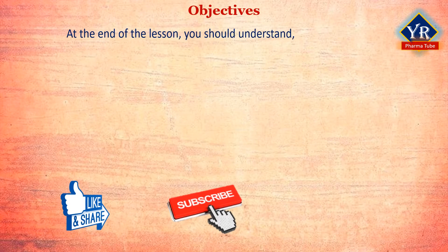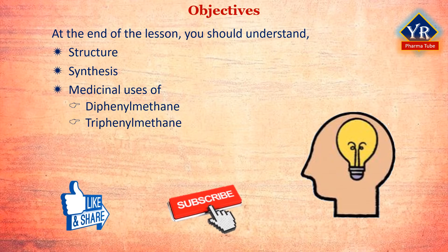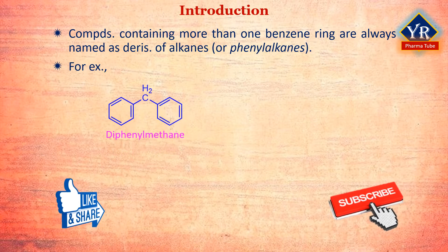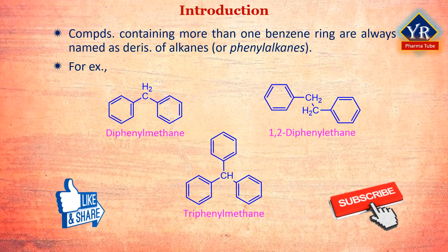At the end of this lesson, you should understand the structure, synthesis, and medicinal uses of diphenylmethane and triphenylmethane. Compounds containing more than one benzene ring are always named as derivatives of alkanes or phenyl alkanes. For example, diphenylmethane, triphenylmethane, and 1,2-diphenylethane. These are isolated polynuclear hydrocarbons because the benzene rings present in their structure are not fused to each other.